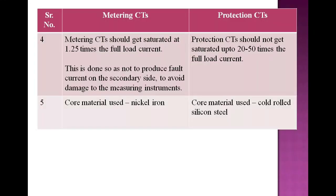Metering CTs should get saturated at 1.25 times the full load current. This is done so as not to produce fault current on the secondary side, to avoid damage to the measuring instruments. Protection CTs should not get saturated up to 20 to 50 times the full load current. Core material used for metering CTs is nickel iron, while core material used for protection CTs is cold rolled silicon steel.